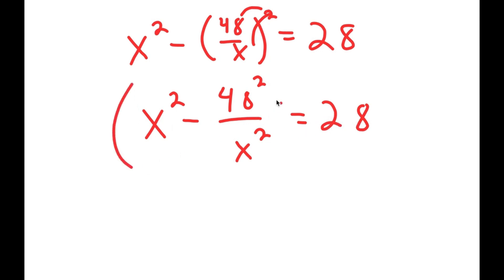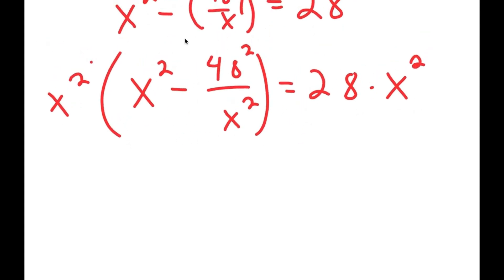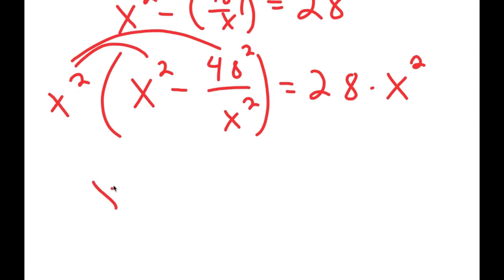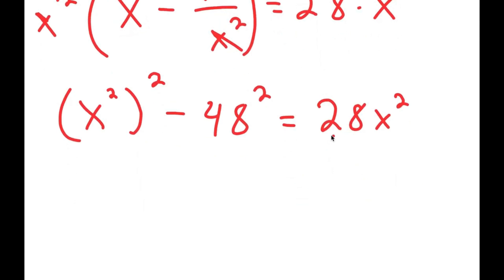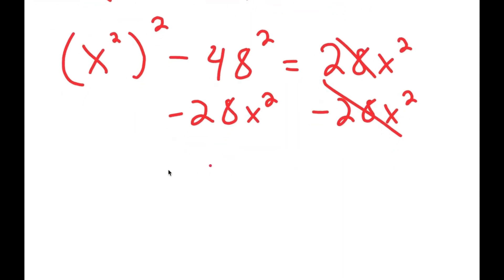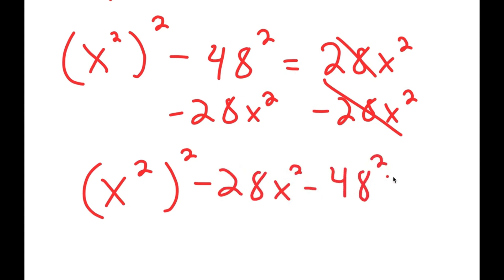Now I multiply both sides by x squared. Distributing, x squared times x squared gives x to the fourth power. The x squared terms in 48 squared over x squared cancel out, leaving just 48 squared. The right side becomes 28 x squared. Subtracting 28 x squared from both sides gives x to the fourth minus 28 x squared minus 48 squared equals zero.